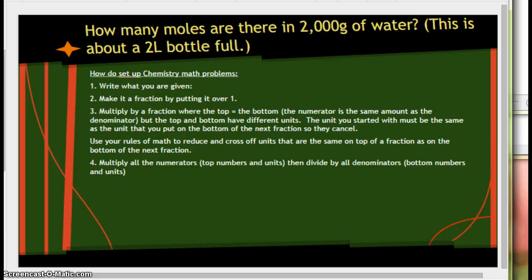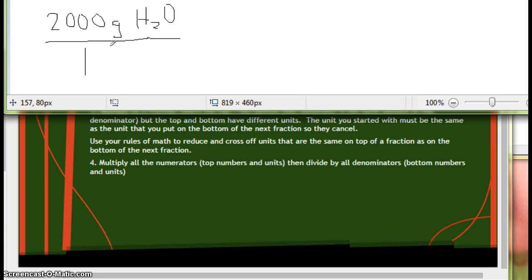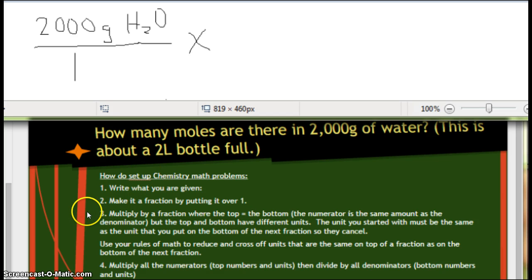You started out with 2,000 grams of water. Step number two is to put it over one. Then we're going to add our next fraction. Step three, multiply by a fraction where the top equals the bottom but they have different units. Well, what unit has to go down here? I have to do grams of water so that my units cancel out. And what am I changing to? It's asking for moles of water.